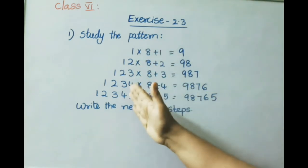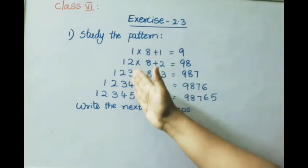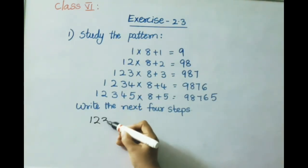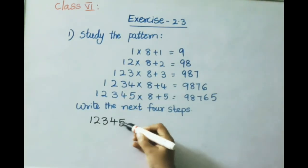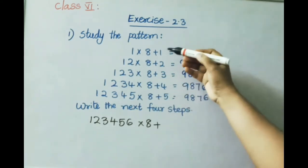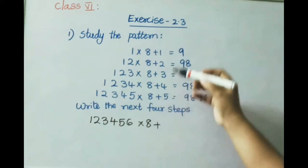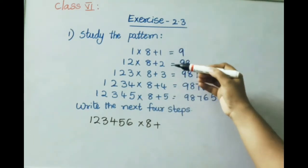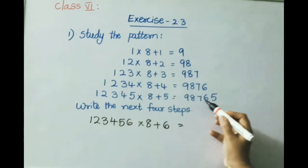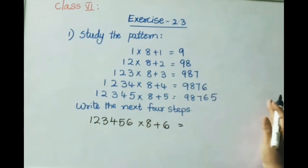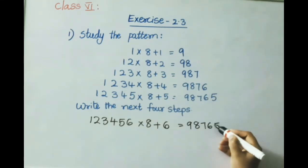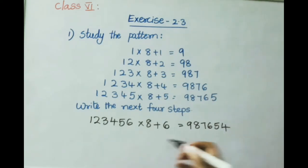Observing the left side: the number before 'into 8' increases by one digit each step — 1, 2, 3, 4, 5, 6. The number added also increases: plus 1, plus 2, up to plus 6. The answer digits on the right go from highest to lowest. So step 6 is: 123456 into 8 plus 6, and the answer continues the descending pattern.